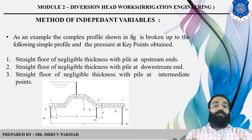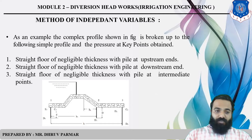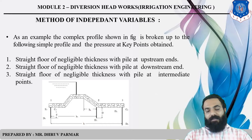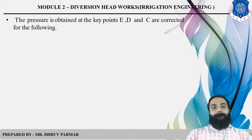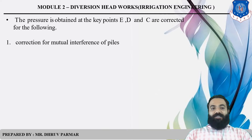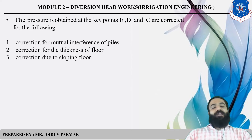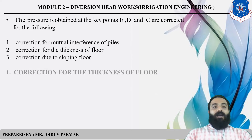This is the profile and three piles are given: first one upstream, second one intermediate, third one downstream. There are three corrections: first, correction for mutual interference of pile; second, correction for thickness; third, correction due to sloping flow.